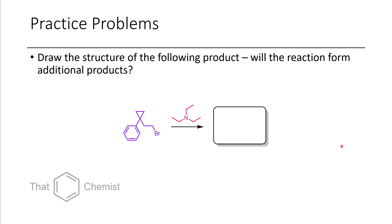Now in the next problem, I asked you to show the product from the following reaction. Here we have an alkyl halide and a tertiary amine. If you recall from last lecture, tertiary amines can be alkylated to form quaternary ammonium salts. And so that's how we would get this quaternary ammonium salt here as a product.